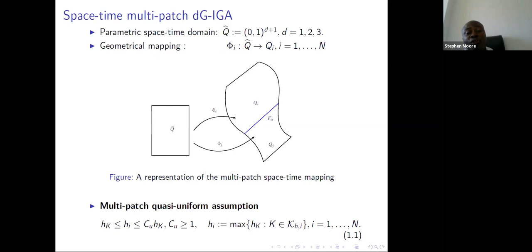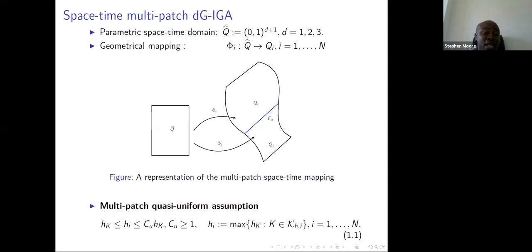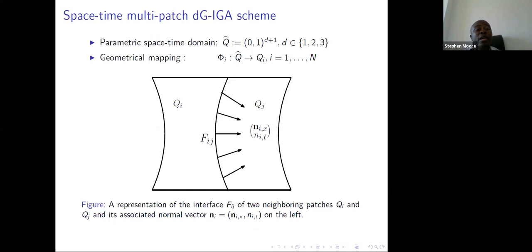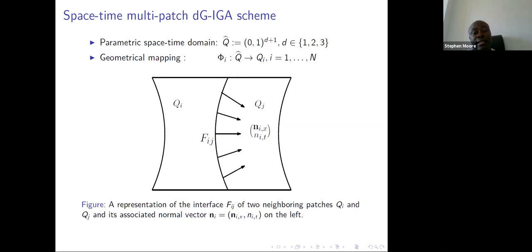When all mesh sizes are the same, the mesh is uniform across all patches. We have a discrete Spacetime domain where each patch comes with its own discrete space, and we combine these into one multi-patch discrete space. On a patch qi and a patch qj, if the domain can be moving, we have on the interface fij the outward normal, the outward normal in space, and the outward normal in time.